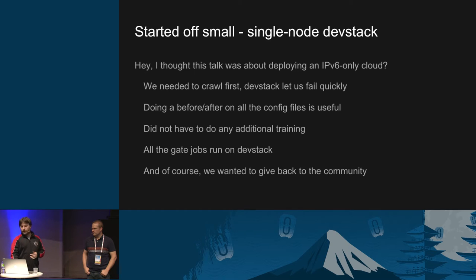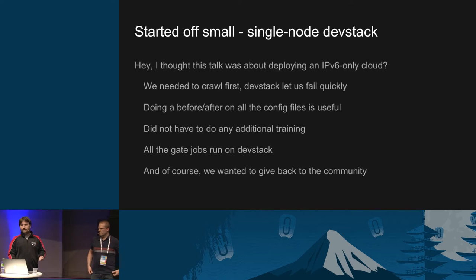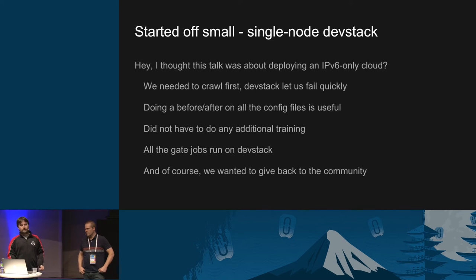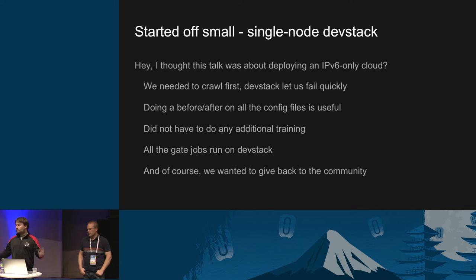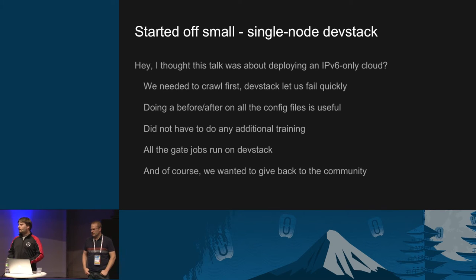We also wanted to contribute back to the community. It's been really important throughout the IPv6 efforts within Neutron and everywhere else that it's done in the community and shared with the community, to have buy-in from all the developers within the OpenStack ecosystem that yes, IPv6 is an important feature to have.